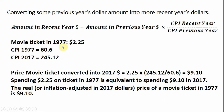So, for example, a movie ticket in 1977 cost $2.25. The CPI in that year was 60.6. The CPI in 2017 was 245.12. So what I would like to do is convert this $2.25 into something we better understand — that is, in more current dollars, 2017 dollars.